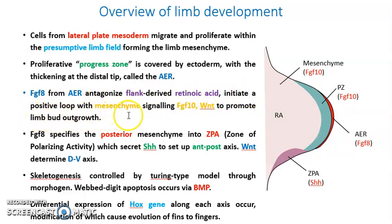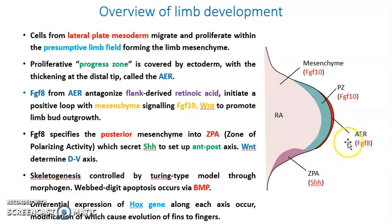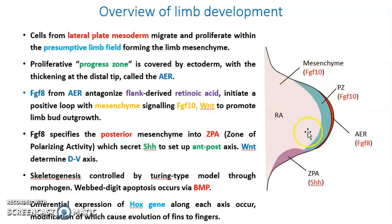FGF8 from the AER antagonizes flank-derived retinoic acid and initiates a positive feedback loop with mesenchyme-secreted FGF10 and Wnt to promote limb bud outgrowth. The AER secretes FGF8, and the flank-derived retinoic acid is antagonistic to it. Together, these paracrine factors create a positive feedback loop that initiates and maintains limb bud outgrowth.